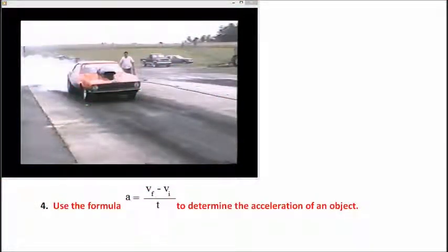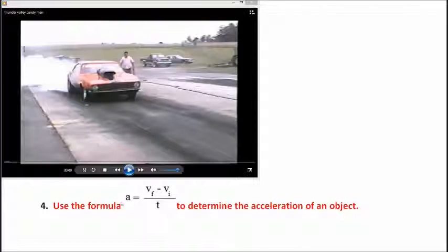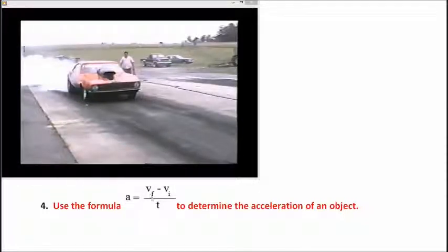All right, now we're going to use the formula acceleration equals V sub F minus V sub I divided by T to determine the acceleration of an object.